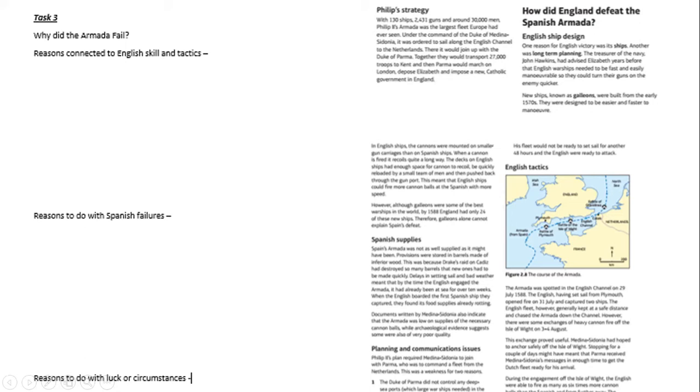We now move to Task 3, which focuses on why the Armada failed. Philip was hugely committed to this attempt to overthrow Elizabeth — desperate to restore Catholicism, to remove her as what he very cruelly called a Protestant heretic bastard. So the question is: if he was so determined and so desperate, why did he fail? We can probably categorise the reasons for failure into three areas.